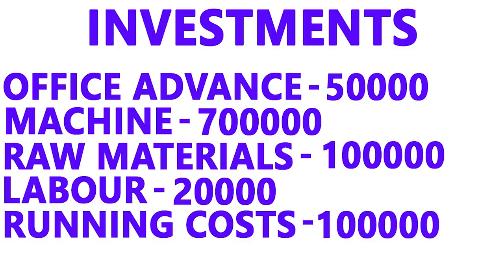This is a commercial business. You can use a city or heart of the city. You can use a commercial business. This is a machine. You can check the link in the description. This is aluminum foil. You can check the link in the description.